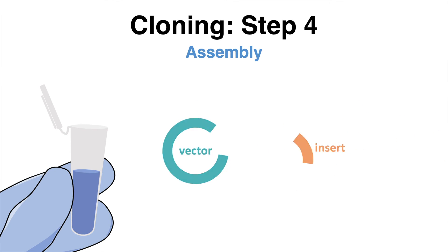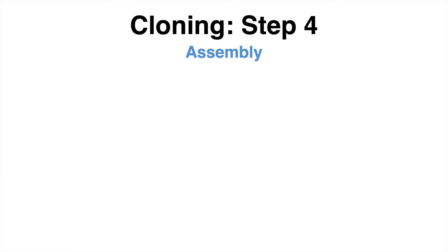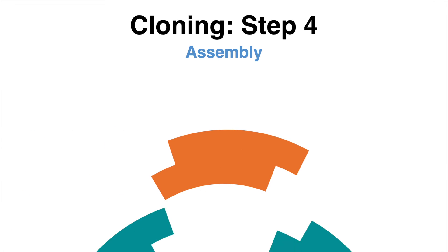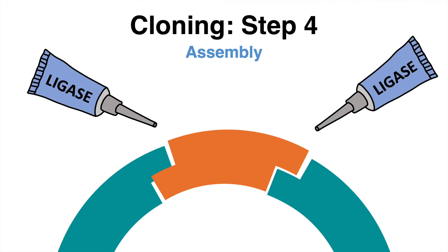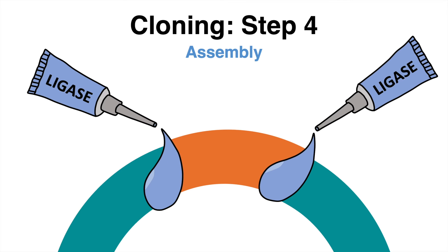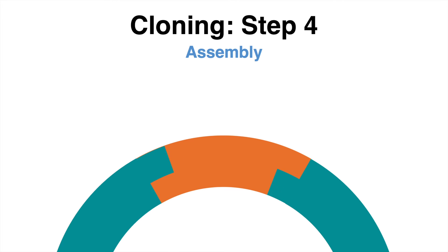The last step is to assemble insert and backbone. Both digested DNA fragments are incubated together. The overhangs generated earlier using restriction enzymes enable scientists to join the DNA of interest with the vector, ensuring compatibility between the sticky ends of the fragment and the vector. Ligase is added to link the two fragments together. This molecule is now known as recombinant DNA.